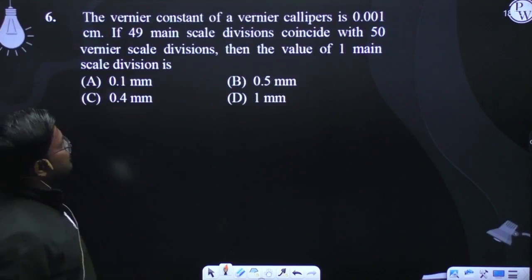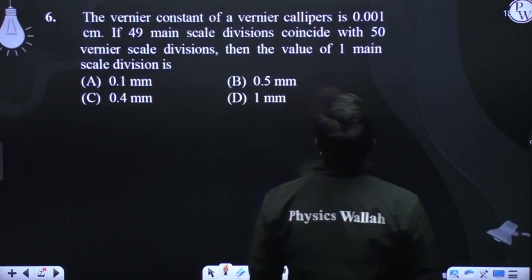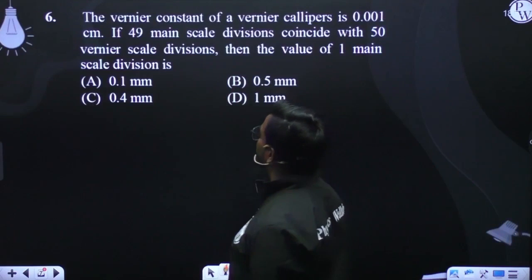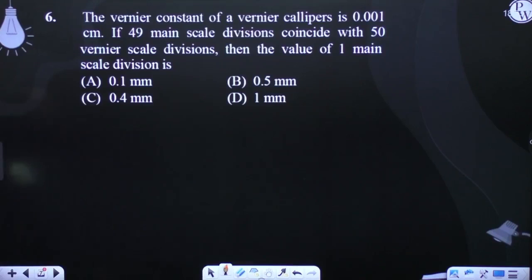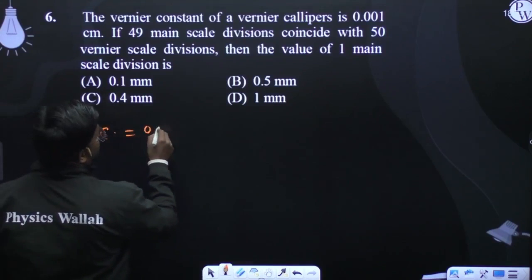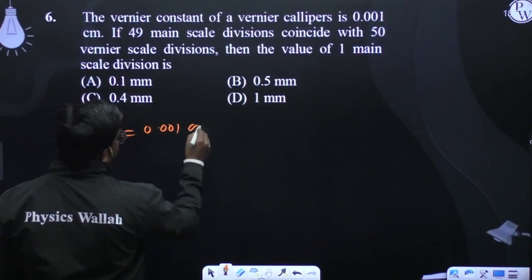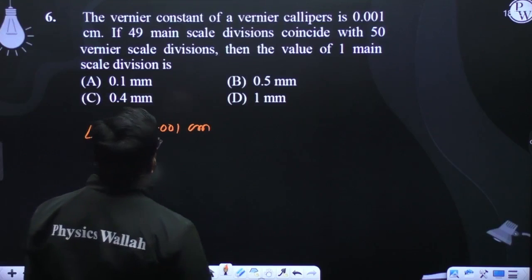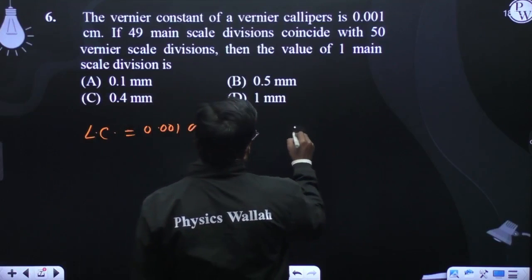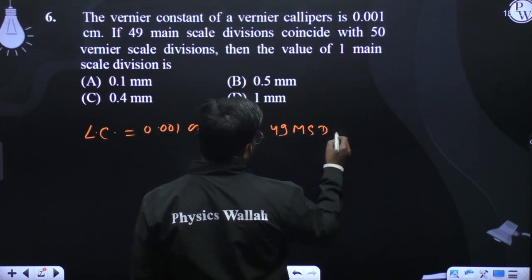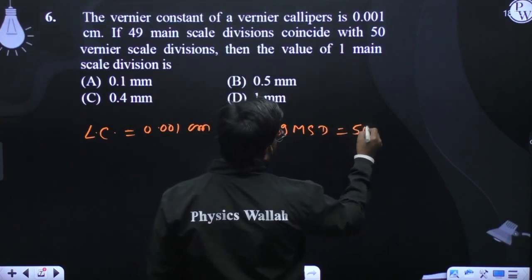The vernier constant of a vernier caliper is 0.001 centimeter. If 49 main scale divisions coincide with 50 vernier scale divisions, then 49 MST equals to 50 VST.